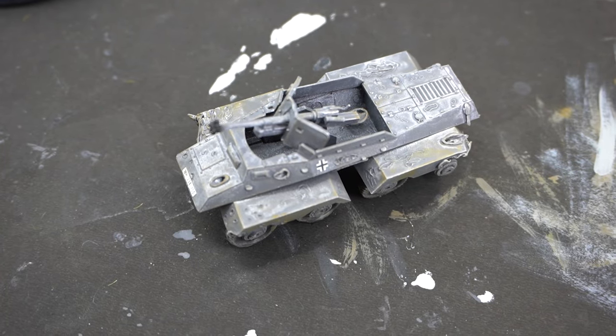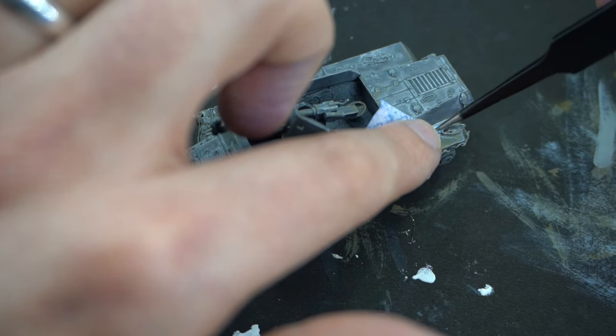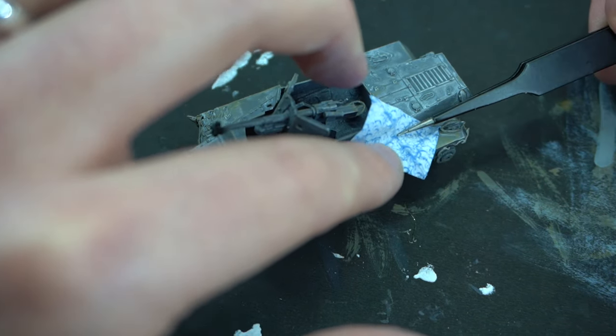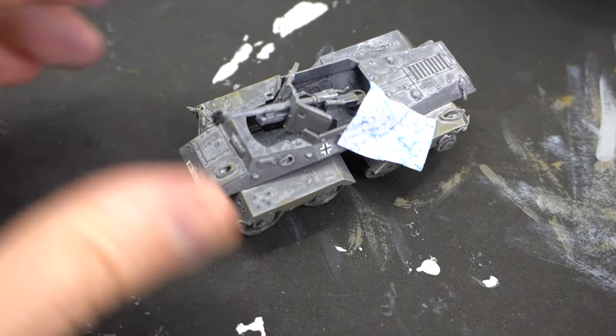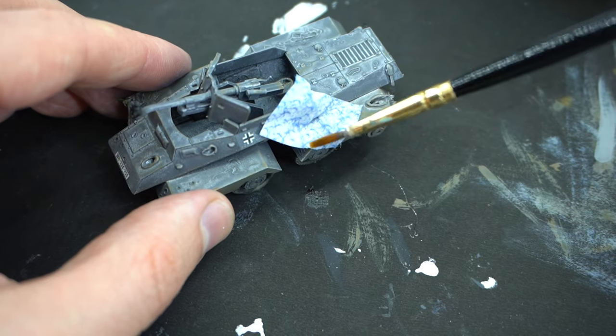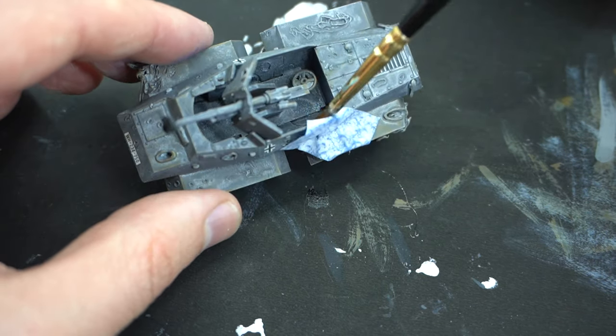I wanted to add some extra detail to the armoured car. So to do this, I've got some very thin paper—this is from an envelope—and it was soaked in some warm water and then carefully manipulated around. And the aim here is to make this look like a tarpaulin, so when the water dries, it should retain its shape.